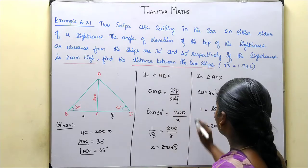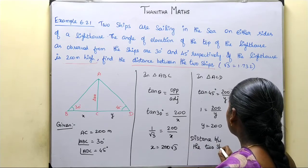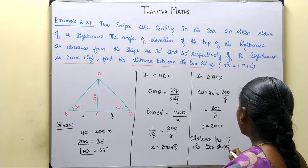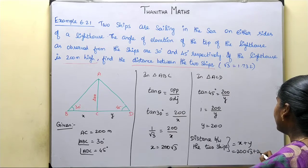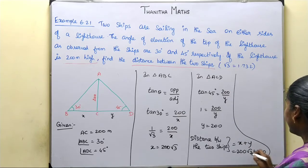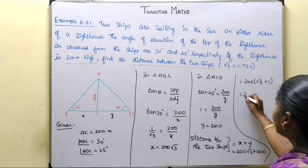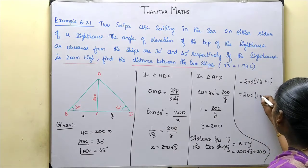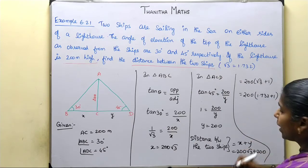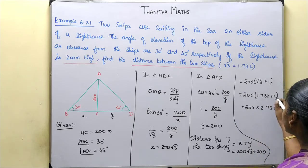Now we have the distance between the two ships. The distance between the two ships is x plus y. So x value is 200 root 3 plus y value is 200. Taking 200 as common: 200 into root 3 plus 1. Root 3 is equal to 1.732, so 1.732 plus 1 equals 2.732. So the distance is 200 into 2.732.